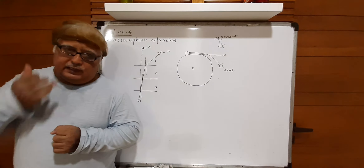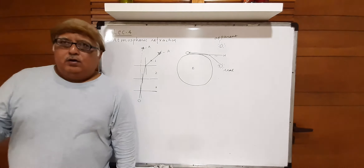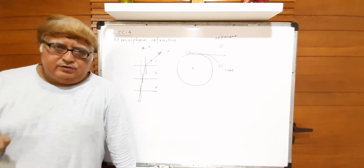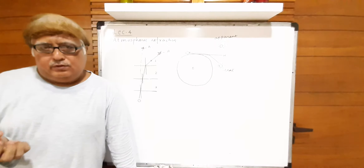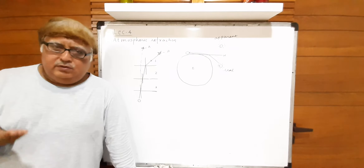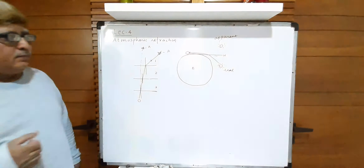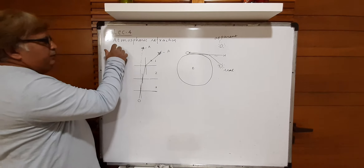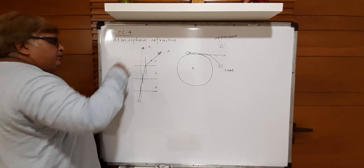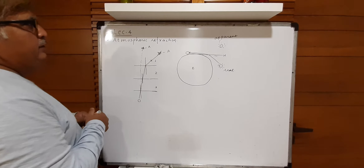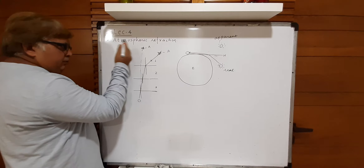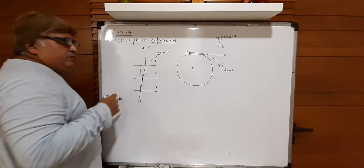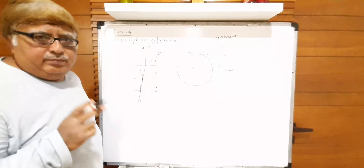You have already been given an idea about many mediums with different optical densities — for example, glass, water, diamond, and kerosene. Today our target is to understand the particular phrase 'atmospheric refraction.' A question may arise in your mind: we know refraction very well — it occurs when a light ray passes from one transparent medium to another.